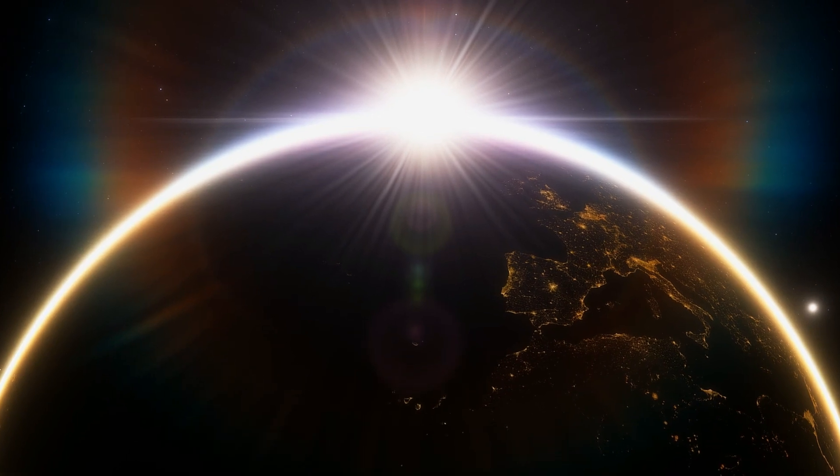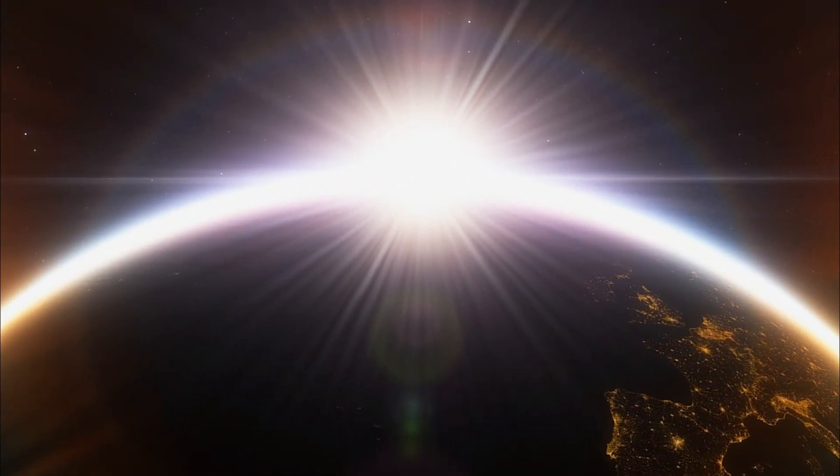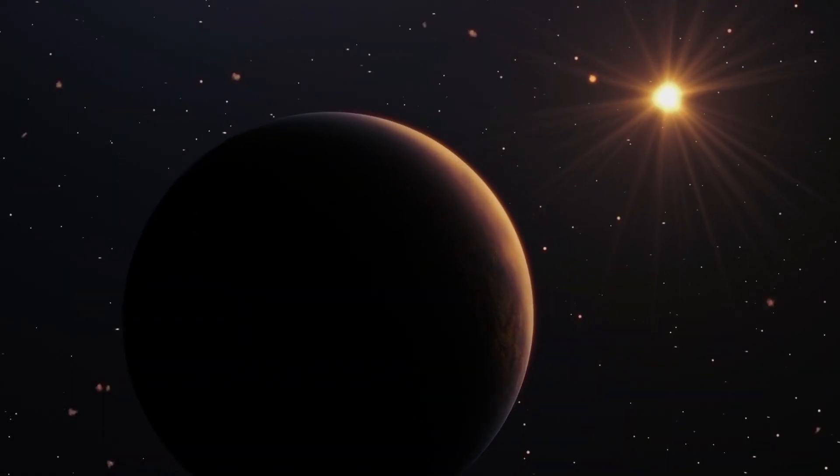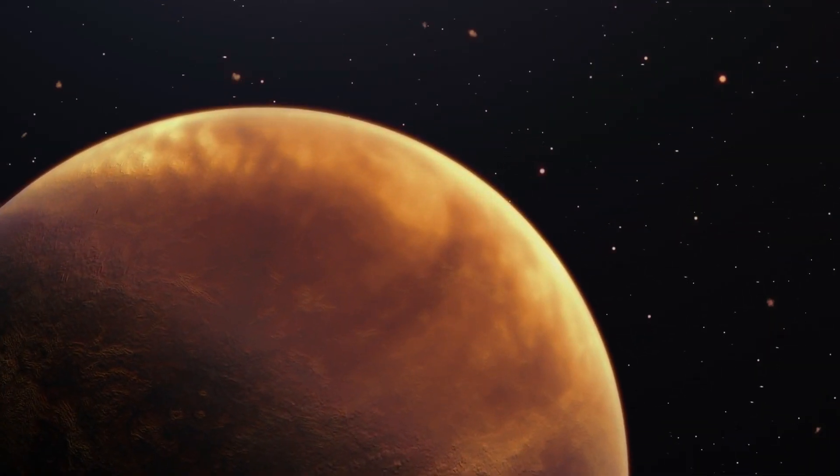This is Proxima b, the closest exoplanet to Earth, just over four light years away. Discovered in 2016, it's an intriguing world that orbits within its star's habitable zone, where liquid water could potentially exist.